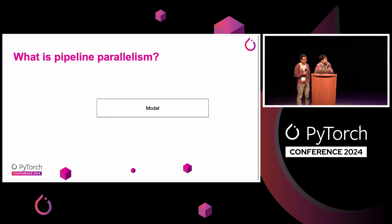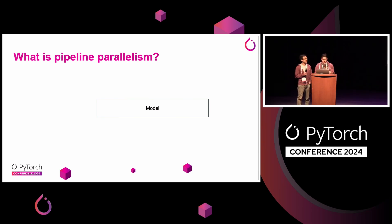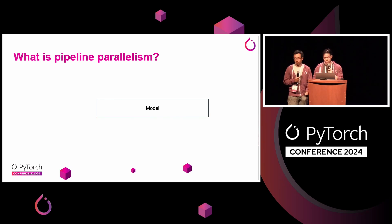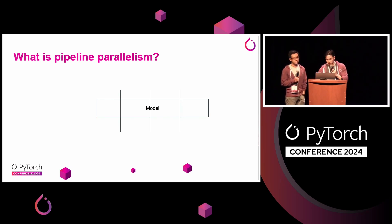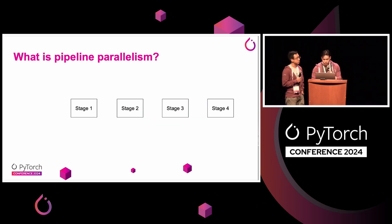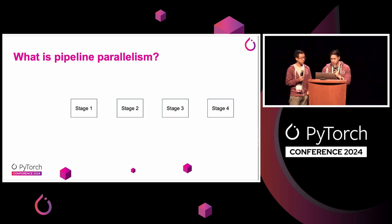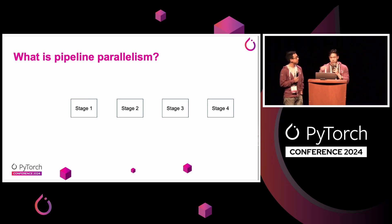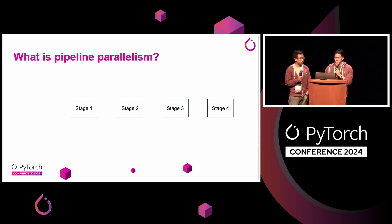So to start, what is pipeline parallelism exactly? Pipeline parallelism is a form of model parallelism. Imagine that you have a model and it's too big to fit on a single GPU. What you can do is cut the model — in this example, we're cutting the model into four different segments. You have the first quarter of the model in stage one, the last quarter in stage four, and also the middle stages.